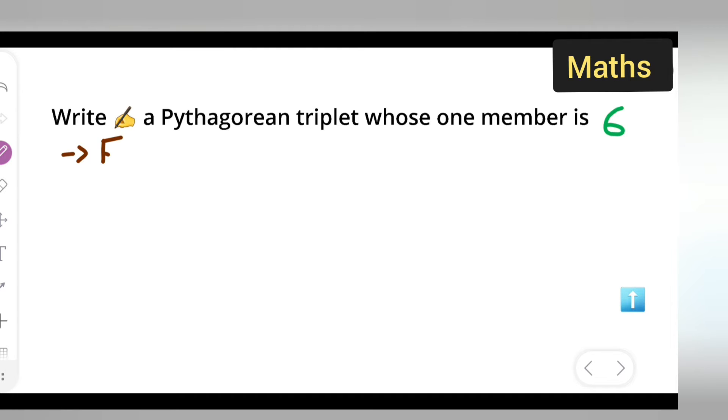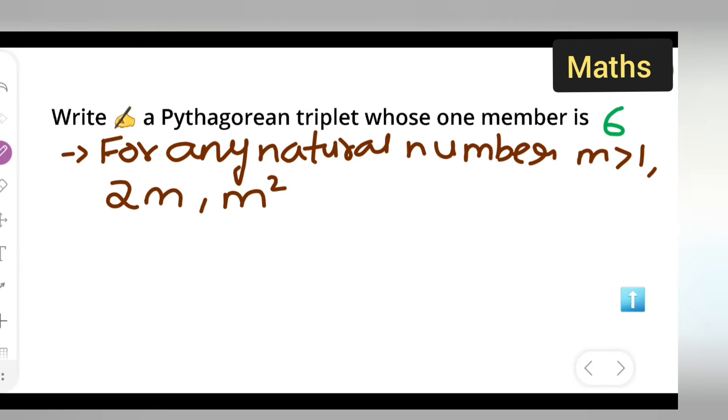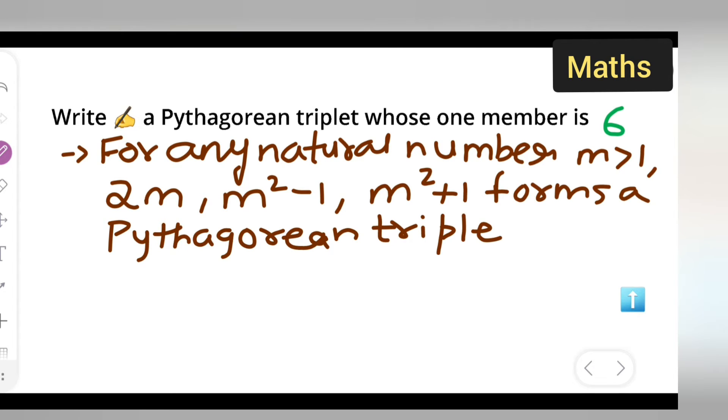For any natural number m greater than 1, 2m, m² - 1, m² + 1 forms a Pythagorean triplet. This will be your first step.